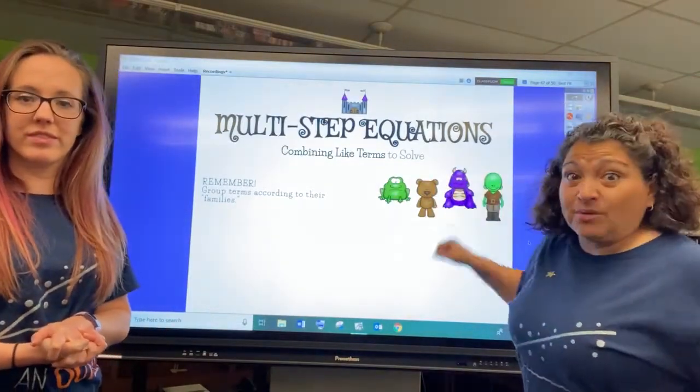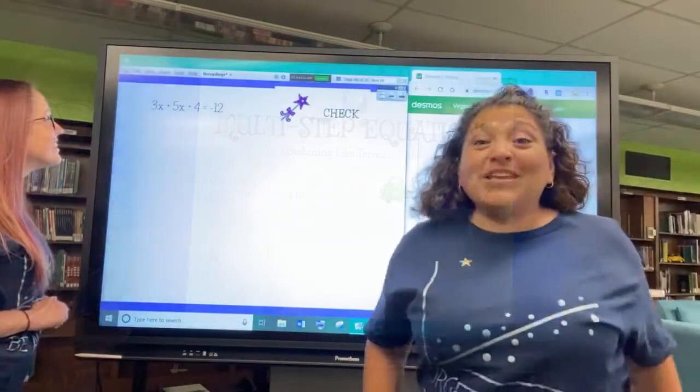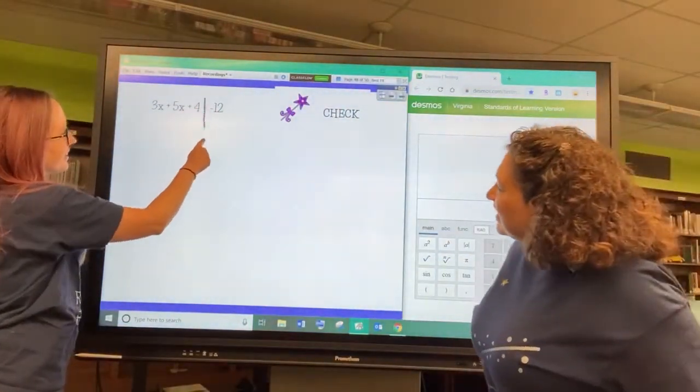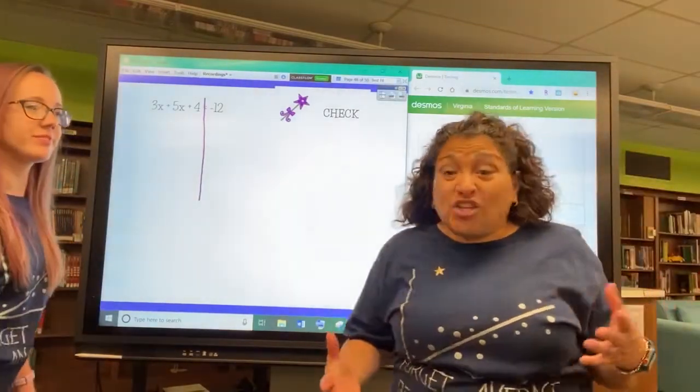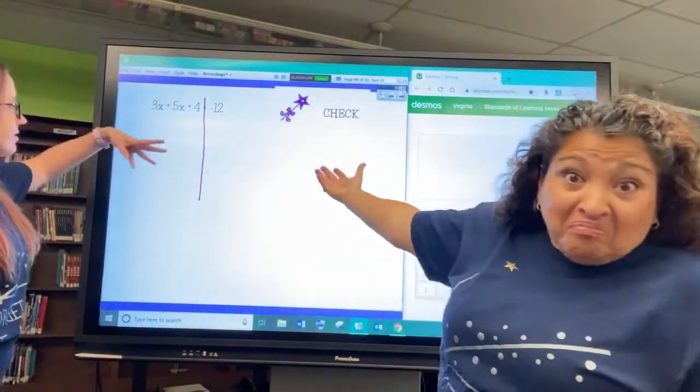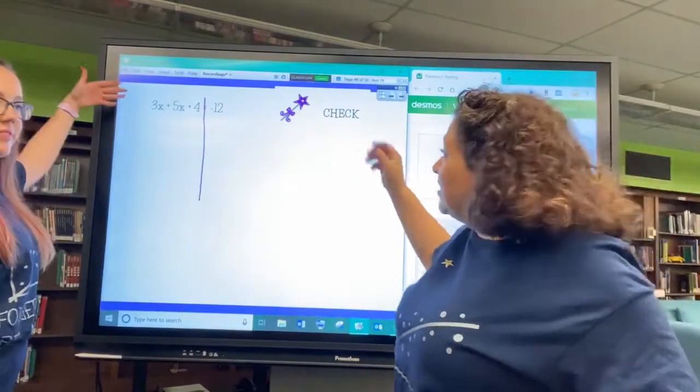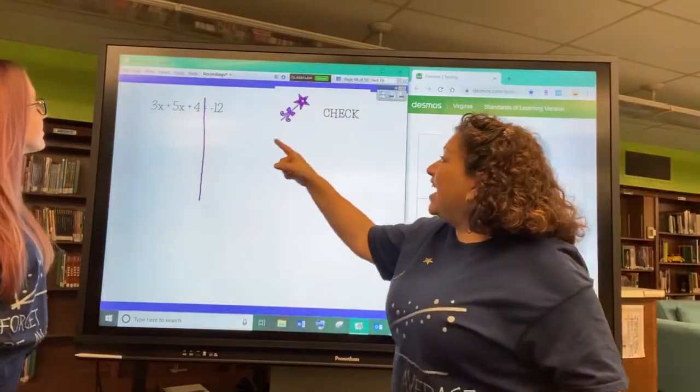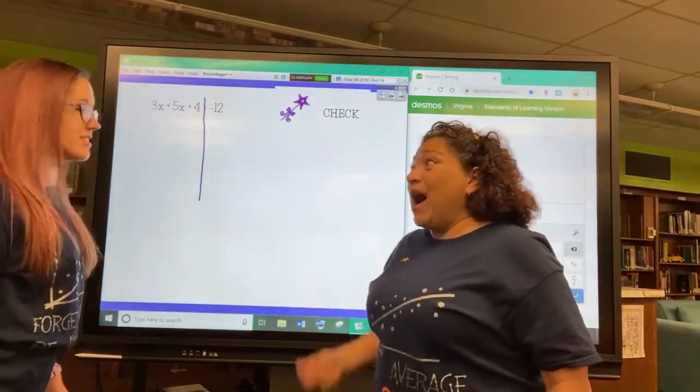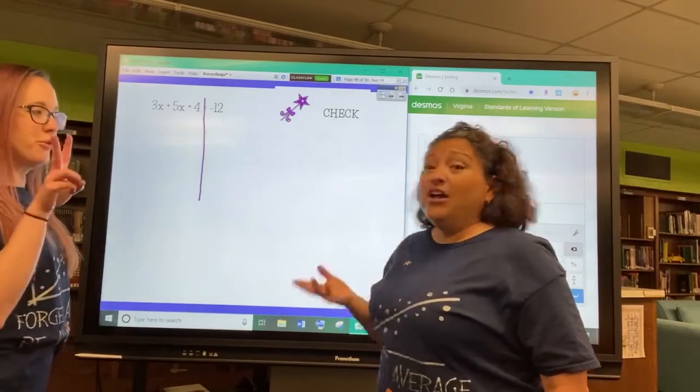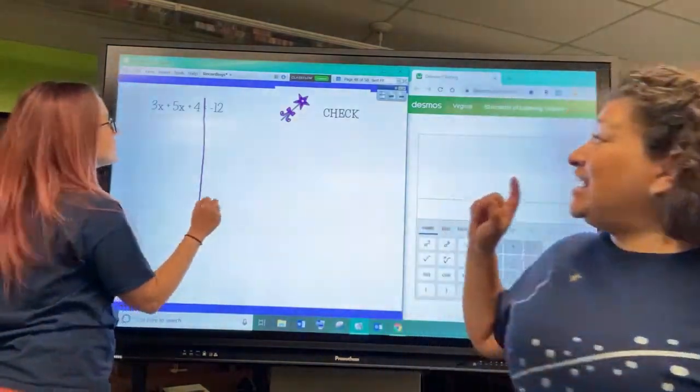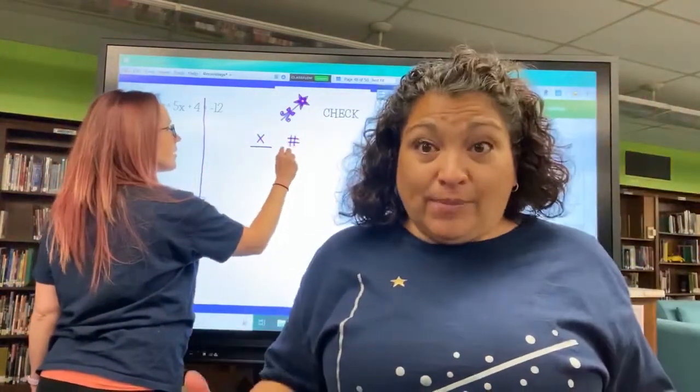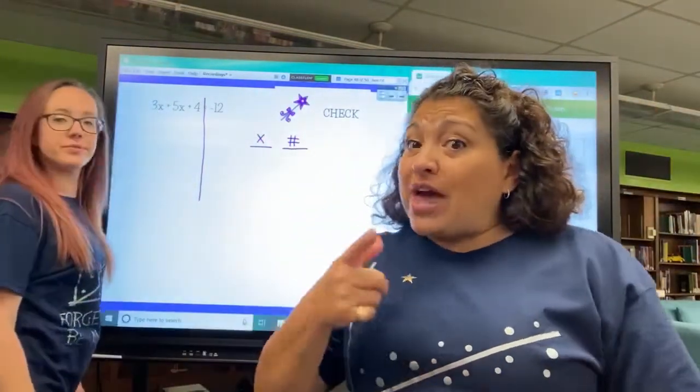Remember our little groupie guys? They're going to be working today. Step number one is to draw our line. Then, we're going to take a good look at this equation. We're going to look at the right side, negative 12. That's pretty plain. And we're going to look at the left side. I'm noticing that there's a 3X, a 5X, and a 4. How many families is that? Two families. So we're going to need to put our X family together and put our number families together. You always need to do that before you start solving.